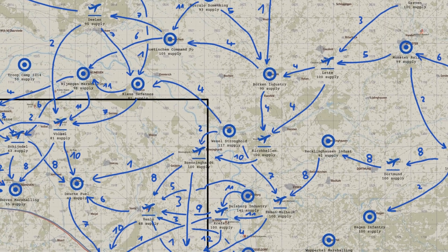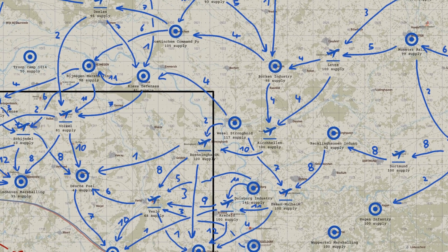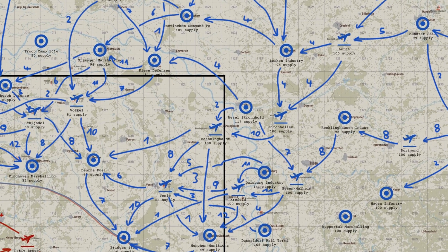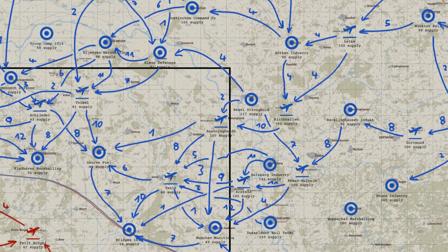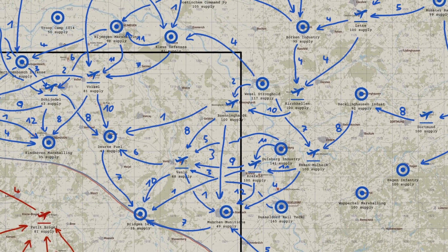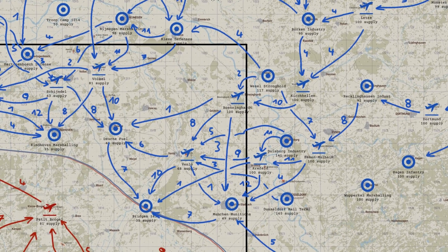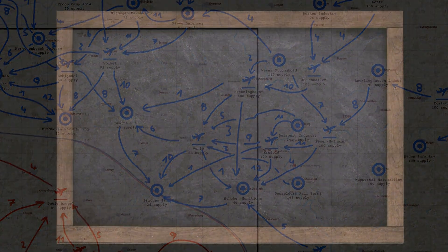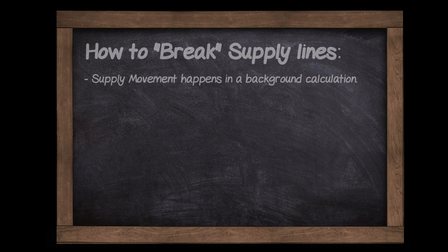And to be very clear, this is all happening in the background, because as much as we would love all these movements of supply to be represented by thousands of little trucks and trains moving between the objectives, that would melt the server.